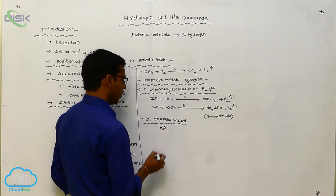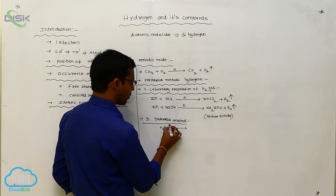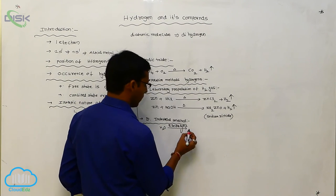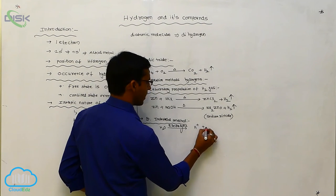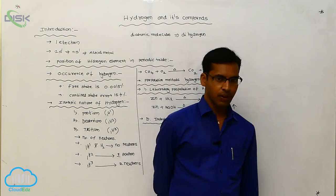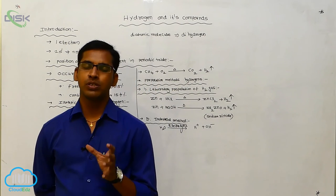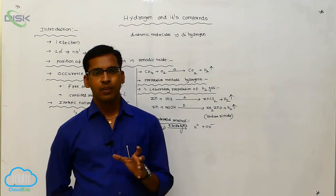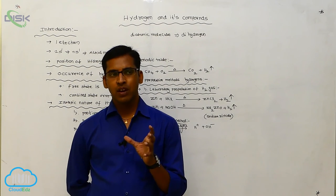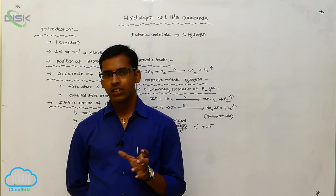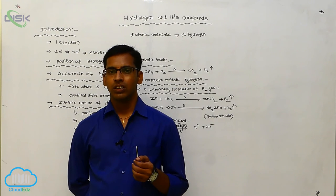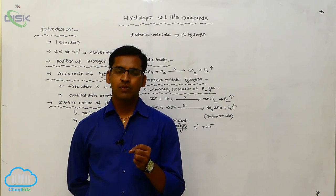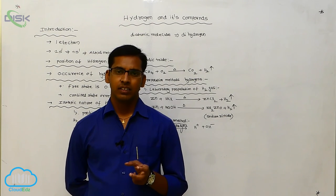For the industrial method of preparation of hydrogen gas: the water molecule undergoes electrolysis to produce cations and anions — H⁺ and OH⁻. Hydrogen gas is also prepared during the preparation of sodium hydroxide when it is reacted with chlorine gas through a brine solution. This is done by the Castner-Kellner method.